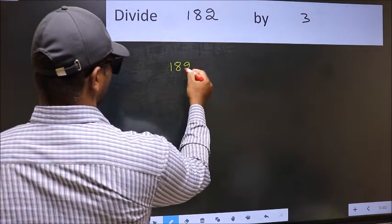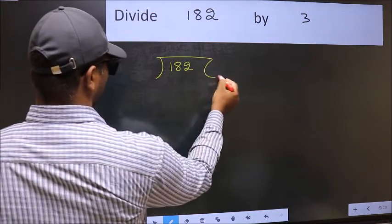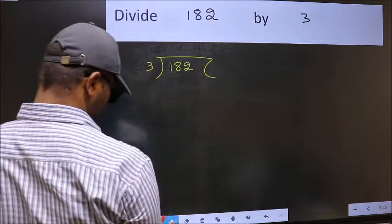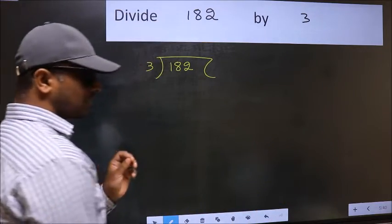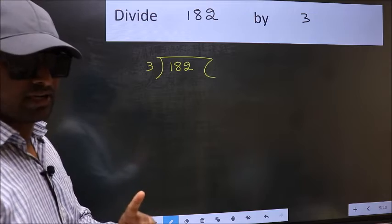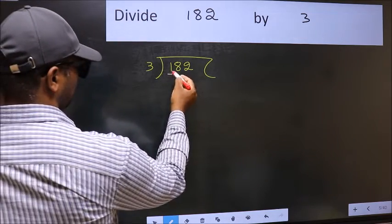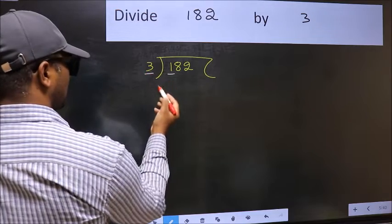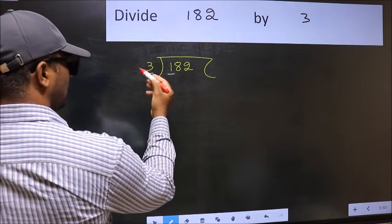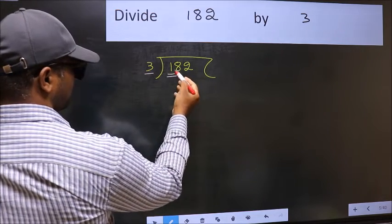182. 3 here. This is your step 1. Next, here we have 1 and here 3. 1 is smaller than 3. So, take 2 numbers, 18.